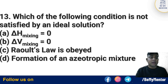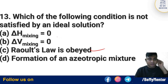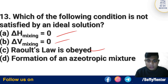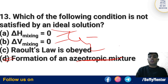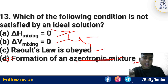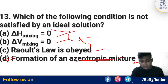Question number 13: Which of the following conditions is not satisfied by an ideal solution? For an ideal solution, delta H mixing equals 0, delta V mixing equals 0, and it follows Raoult's law. However, an ideal solution does not follow the formation of an azeotropic mixture. Options A, B, and C are followed by the ideal solution, but option D — formation of an azeotropic mixture — is not. Option number D is the correct answer.